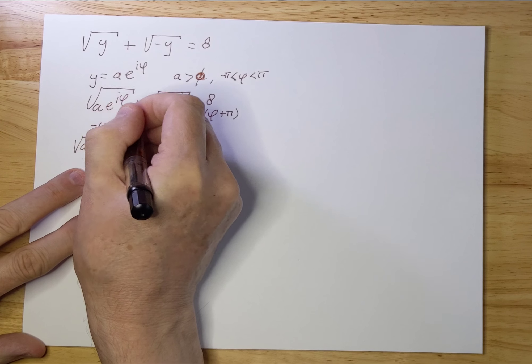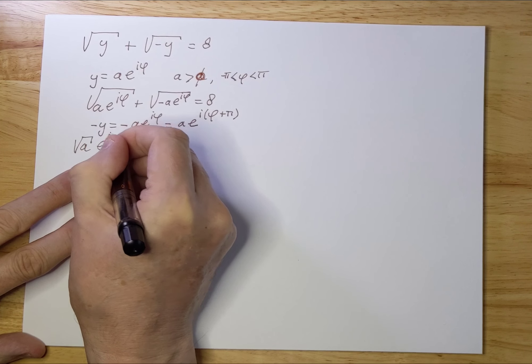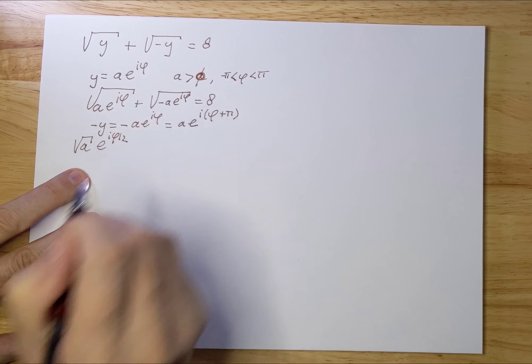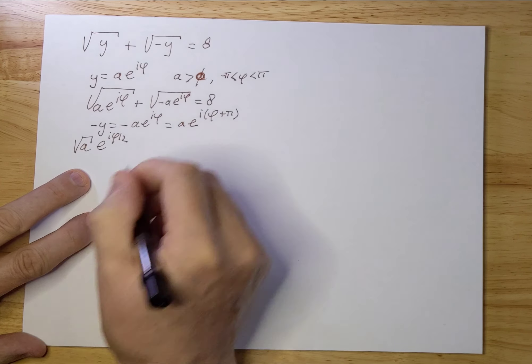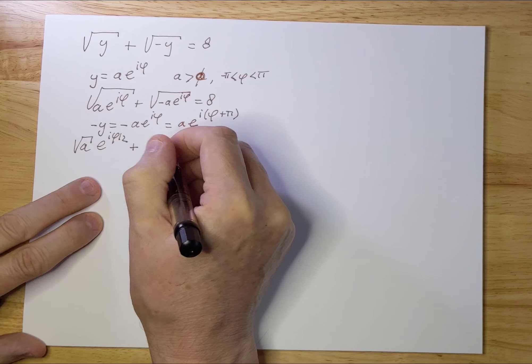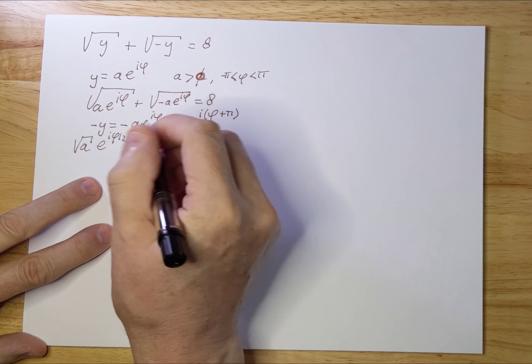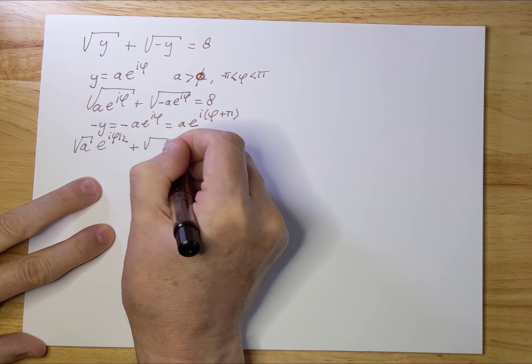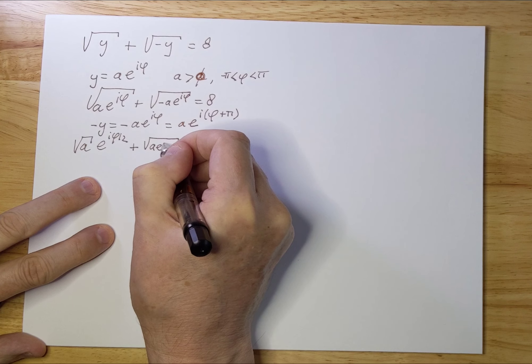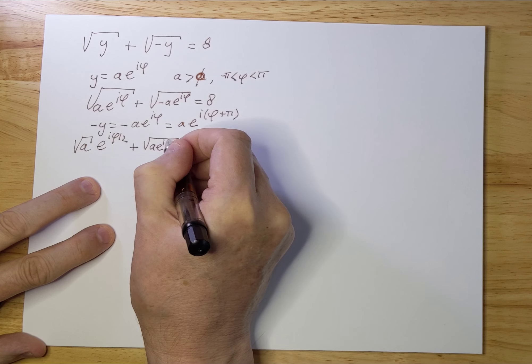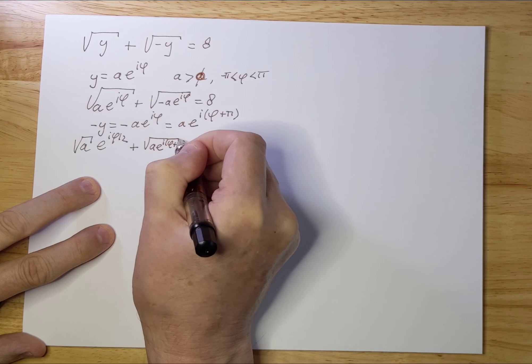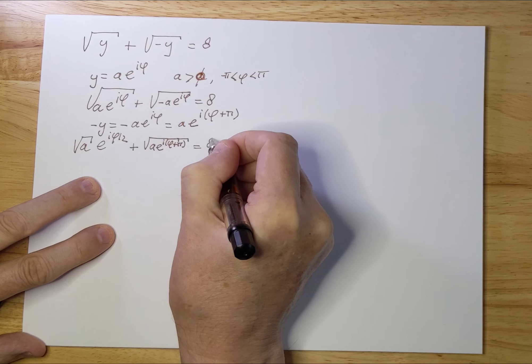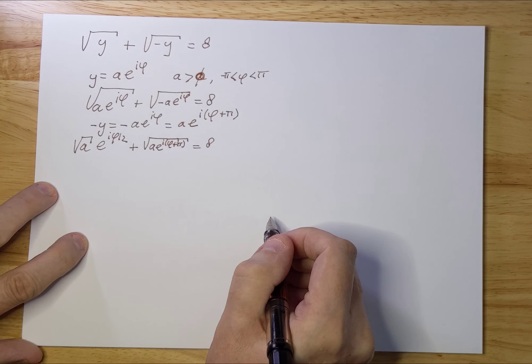Plus, now we're going to fill this one out: ae^(i(φ+π)). And this equals 8. Let's copy the first term: e^(i(φ/2)).